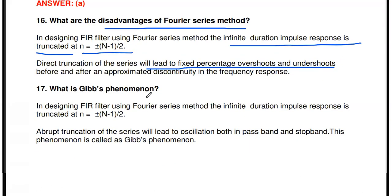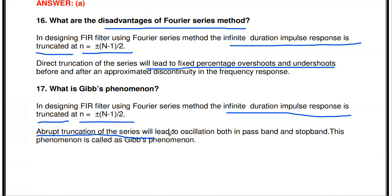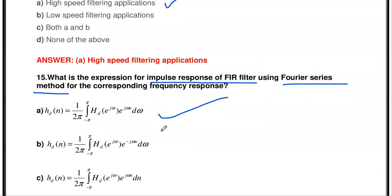What is Gibbs phenomenon? In designing an FIR filter using the Fourier series method, the infinite duration impulse response is truncated suddenly at n = ±(N-1)/2. Due to this abrupt truncation, oscillations appear in both the pass band and stop band — we get ripples instead of a constant response. This oscillation is called Gibbs oscillation or Gibbs phenomenon. To avoid it, we use the windowing technique or Fourier frequency sampling method.